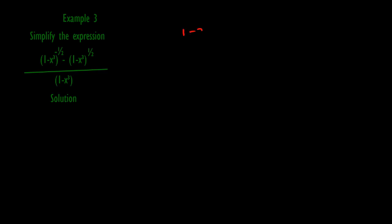To express in simplest form, if we let one minus x cubed equal to a, then we will have a raised to negative a half minus a raised to power half, all divided by a. We substitute the term in the bracket — one minus x cubed — to be a, to make it in simplest form. Then bracket the numerator and denominator to make them single terms.